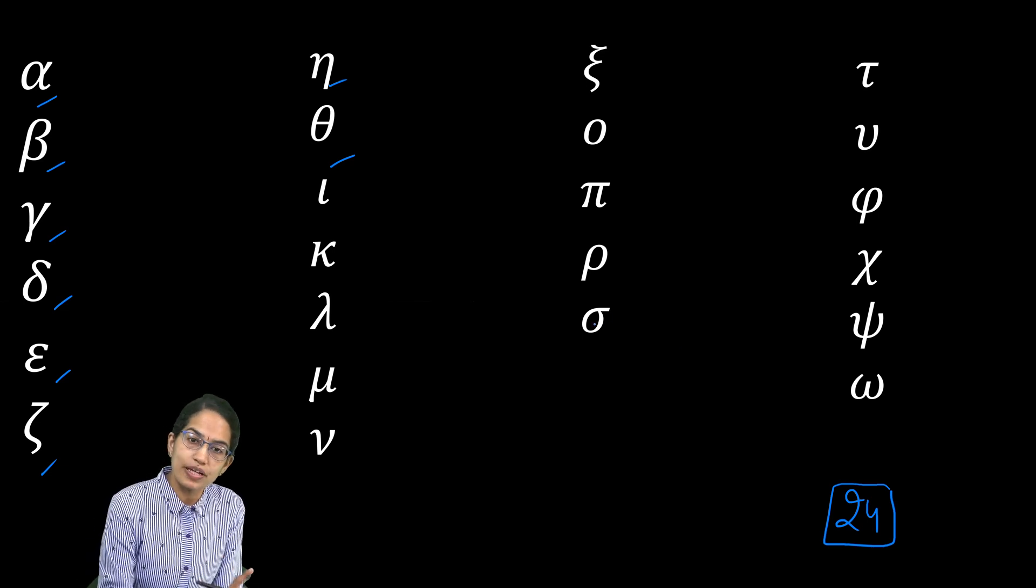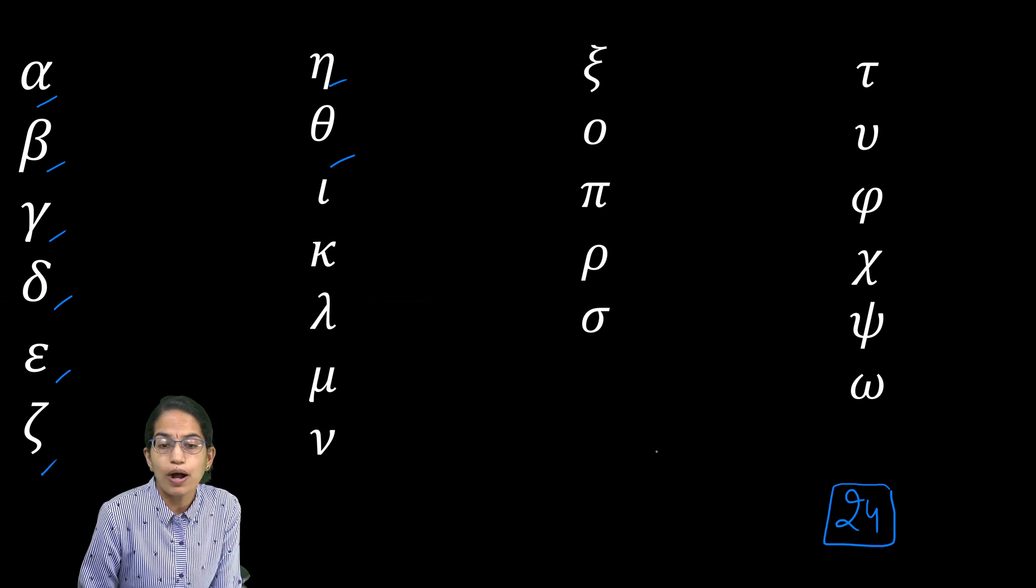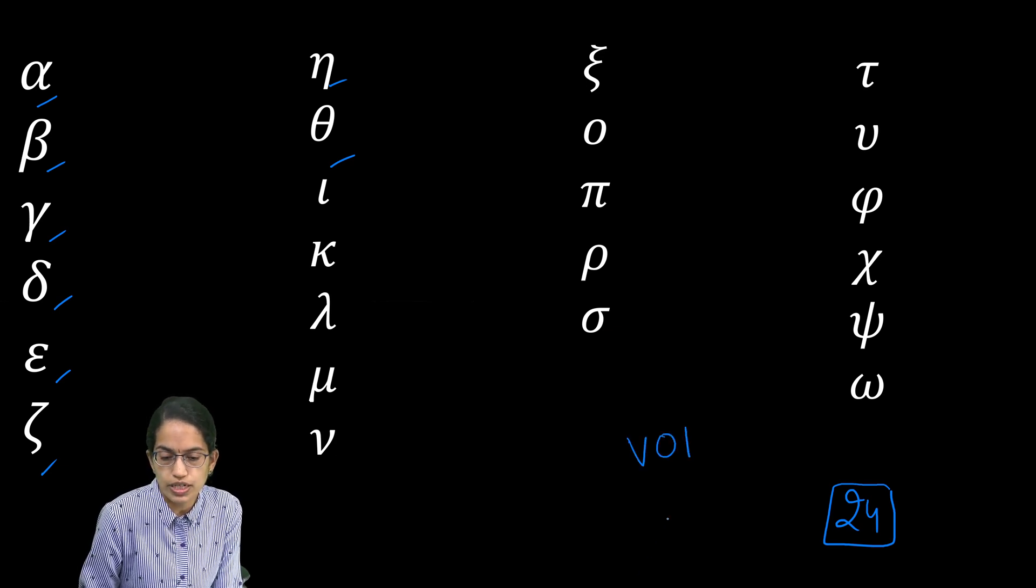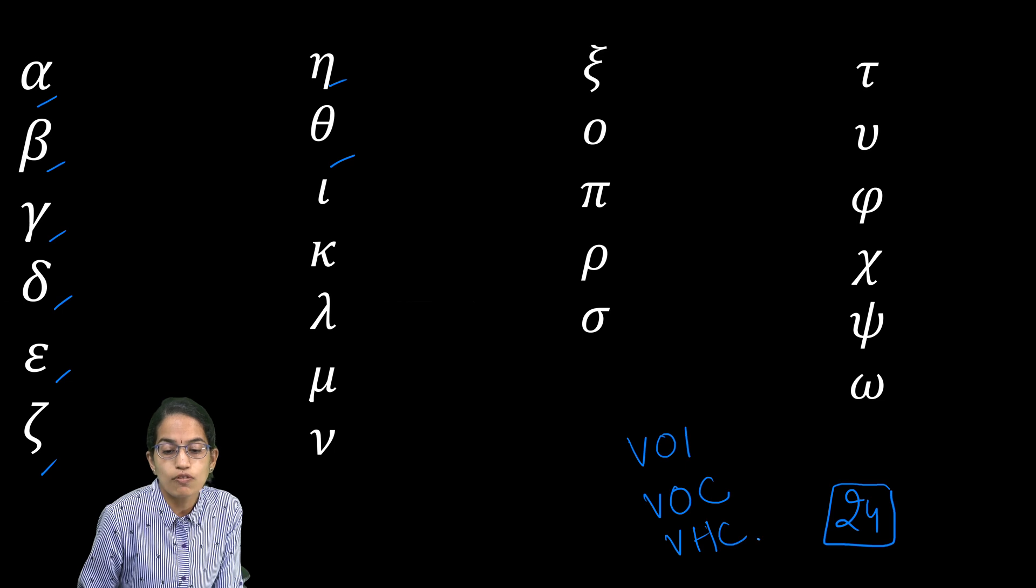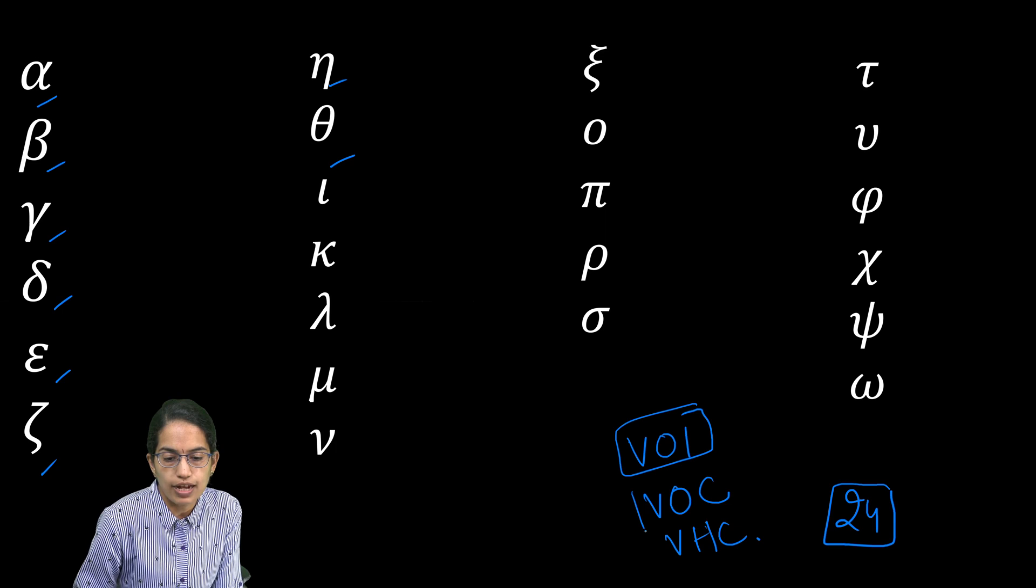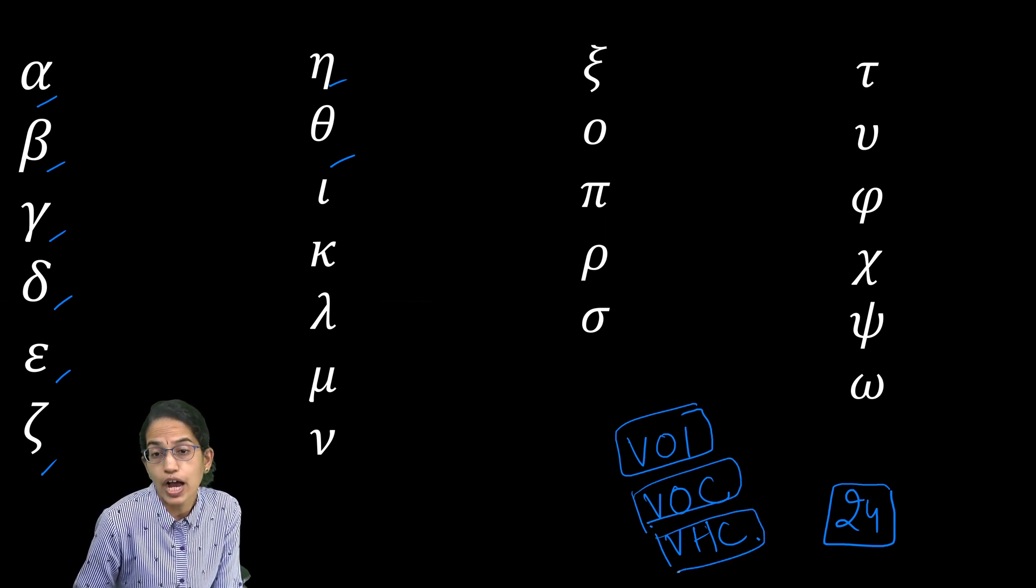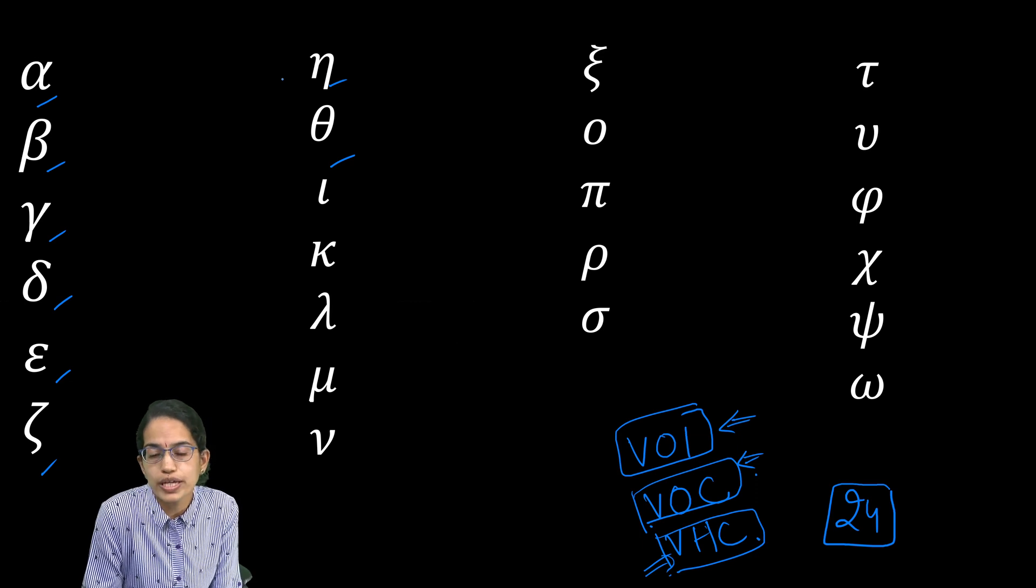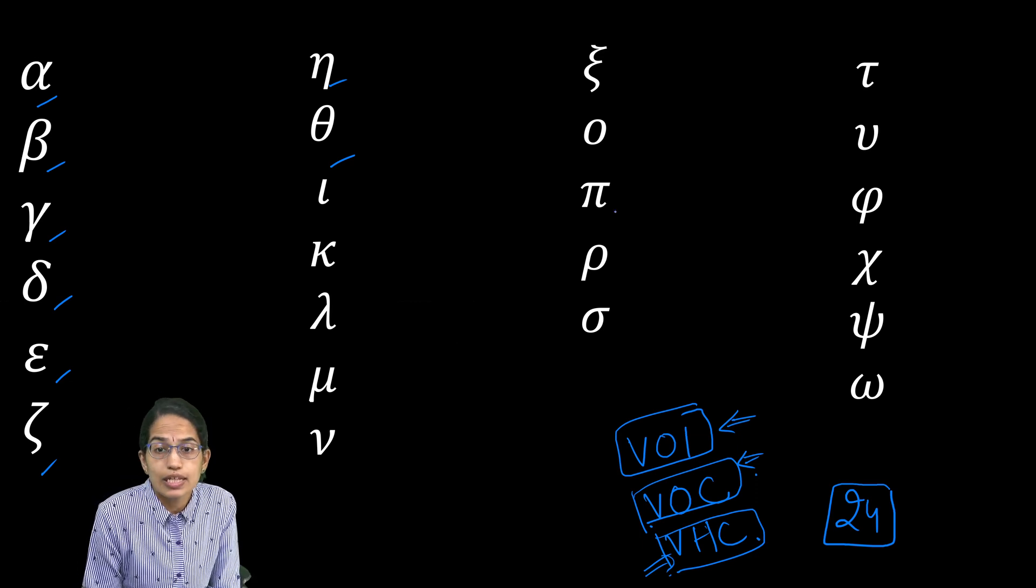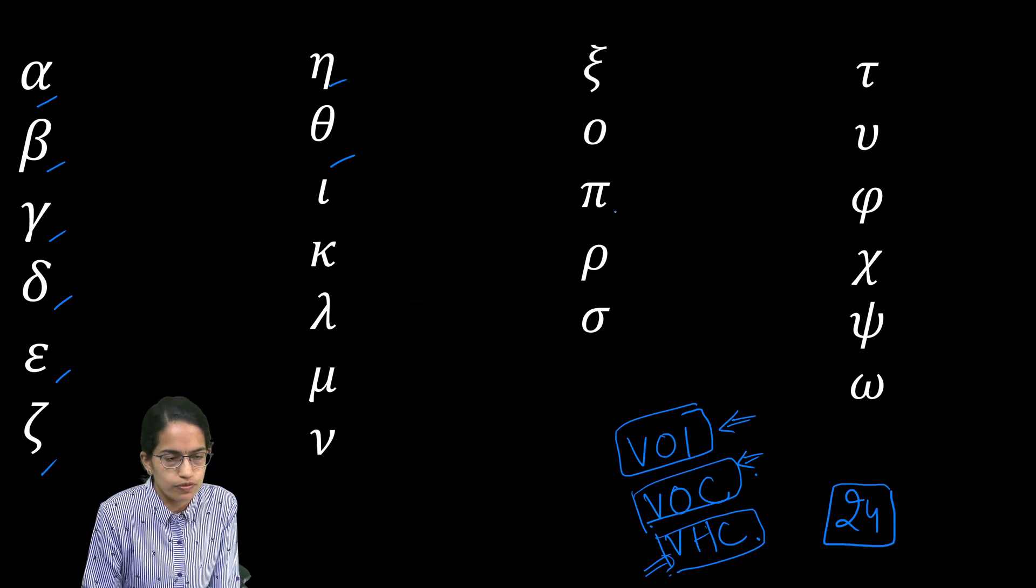In our previous class, we discussed about three types of variants: variants of interest, variants of concern, and variants of high consequence. So far, we have identified variants of interest and variants of concern. There have been no reported cases of variant of high consequences so far, which is really good. But let's understand from these variants what are the new variants and what is the lineage for each variant, the origin for each of the variants.